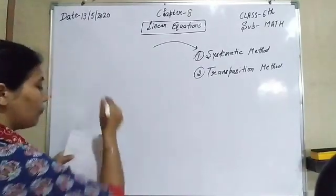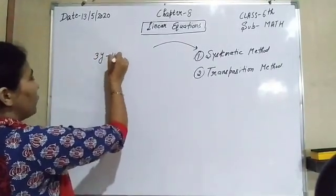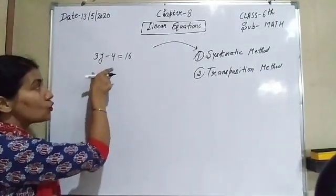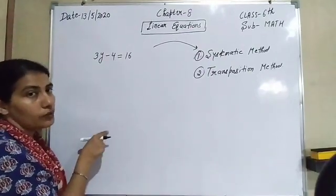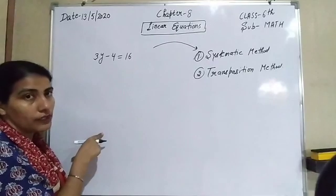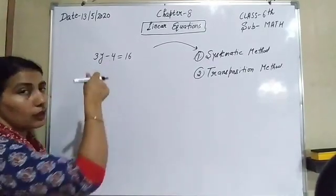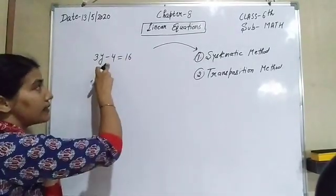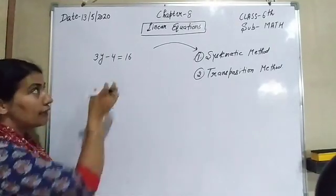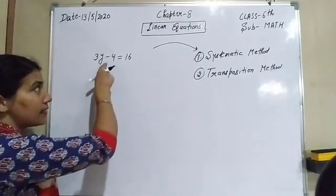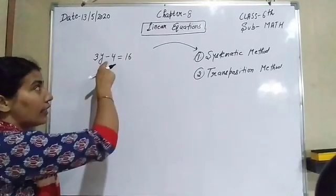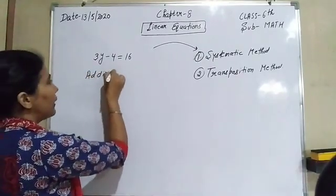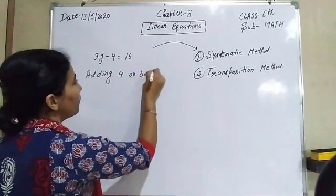The next equation is 3y - 4 = 16. The variable is y, so only y should remain on the left-hand side at the end. First we remove all constants from the left-hand side. Here we have negative 4, so the first step is to add 4 on both sides — because the constant is negative, we add; if it were positive, we would subtract.